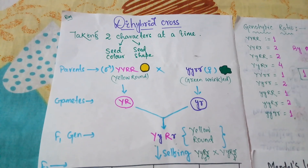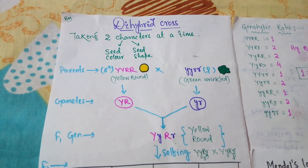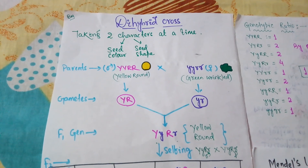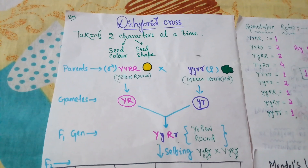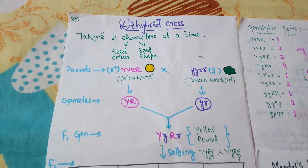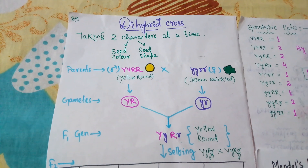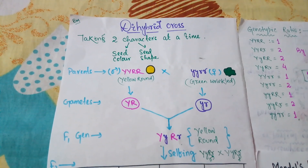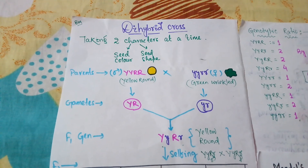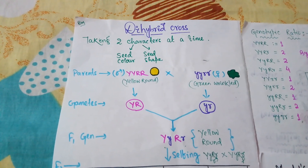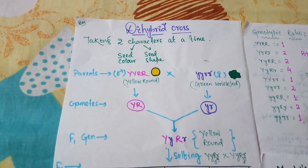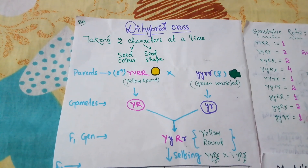Hello children. In the previous video we discussed Mendel's monohybrid experiment and the laws formulated from it: the law of dominance, which states that one allele remains dominant and the other remains recessive, and the law of segregation, which states that alleles do not hamper each other's character and at the time of gamete formation they separate and pass to different gametes. Today we will discuss the dihybrid cross and the subsequent law derived from it — the law of independent assortment.